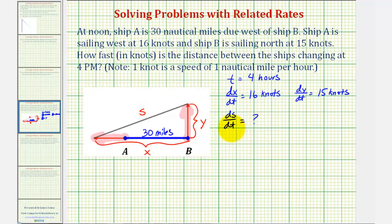To find dS/dt, we need an equation that relates S, X, and Y, which we can then differentiate to find dS/dt. And because we have a right triangle here, we can use the Pythagorean Theorem to form our equation. S squared must equal X squared plus Y squared.